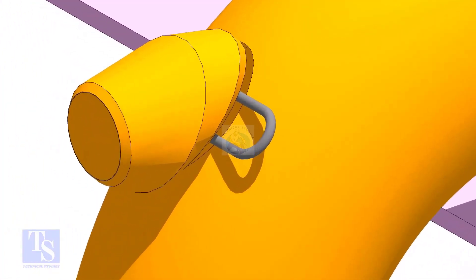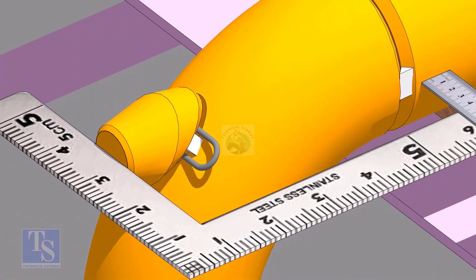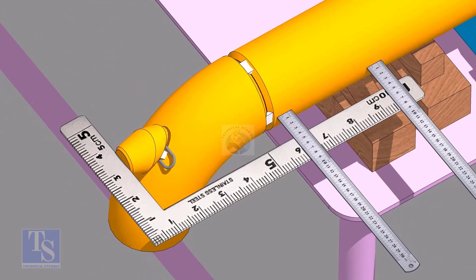Tack weld at one side of the elbowlet just to hold it in position. Don't make too big or too small tacks. Make the elbowlet face square to the side of the pipe.